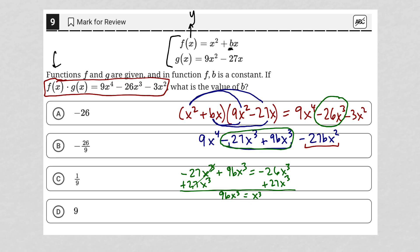Leaving me with 9bx cubed is equal to negative 26 plus 27 is just 1. So that becomes x cubed. Now, if 9bx cubed, oh, I can go further. Divide by x cubed on both sides. So that's gone. This becomes 1.